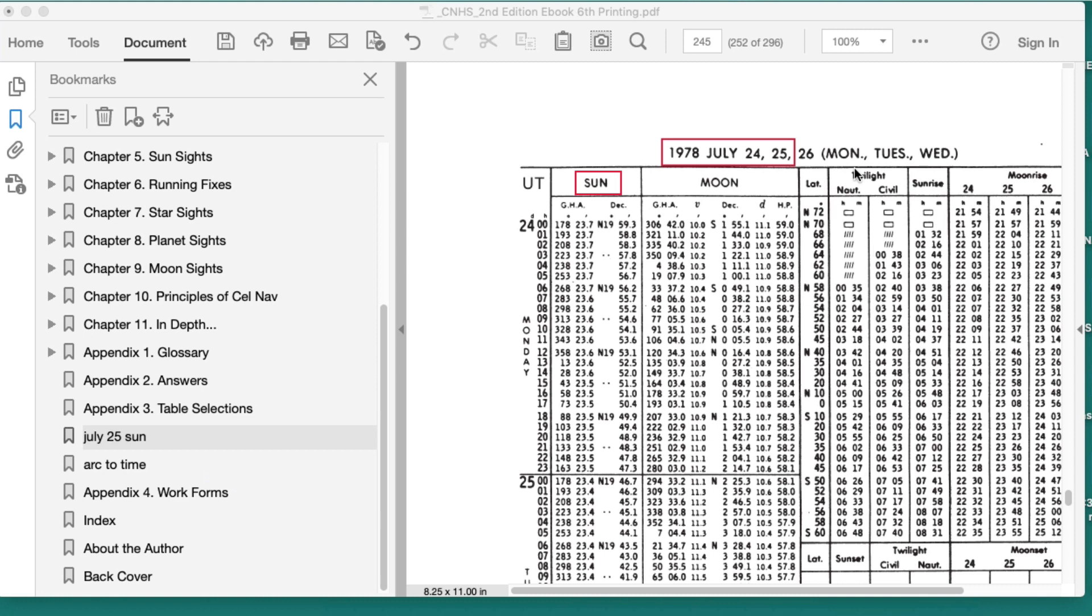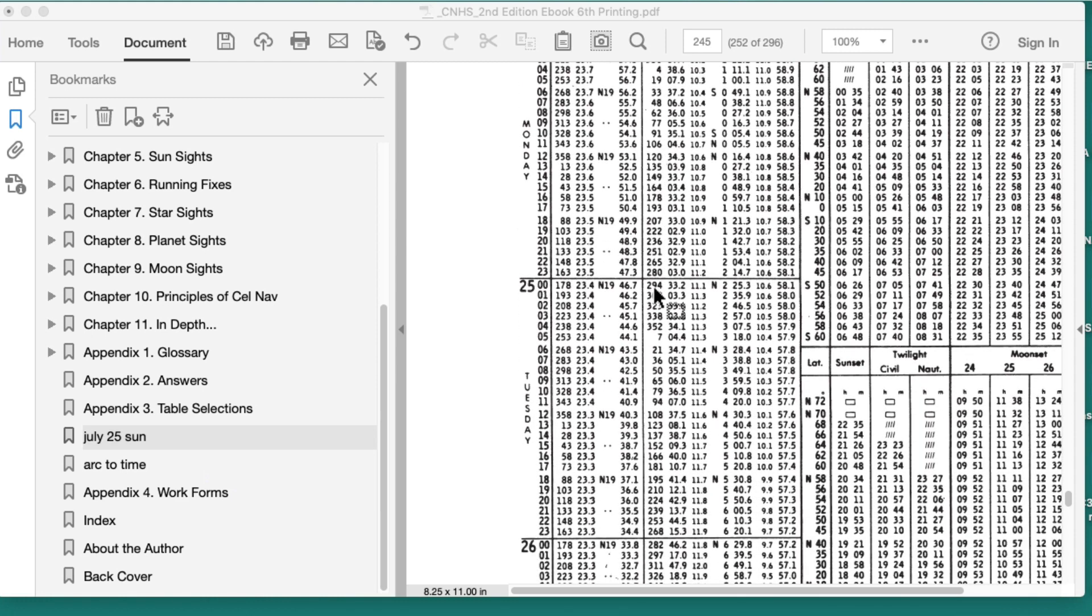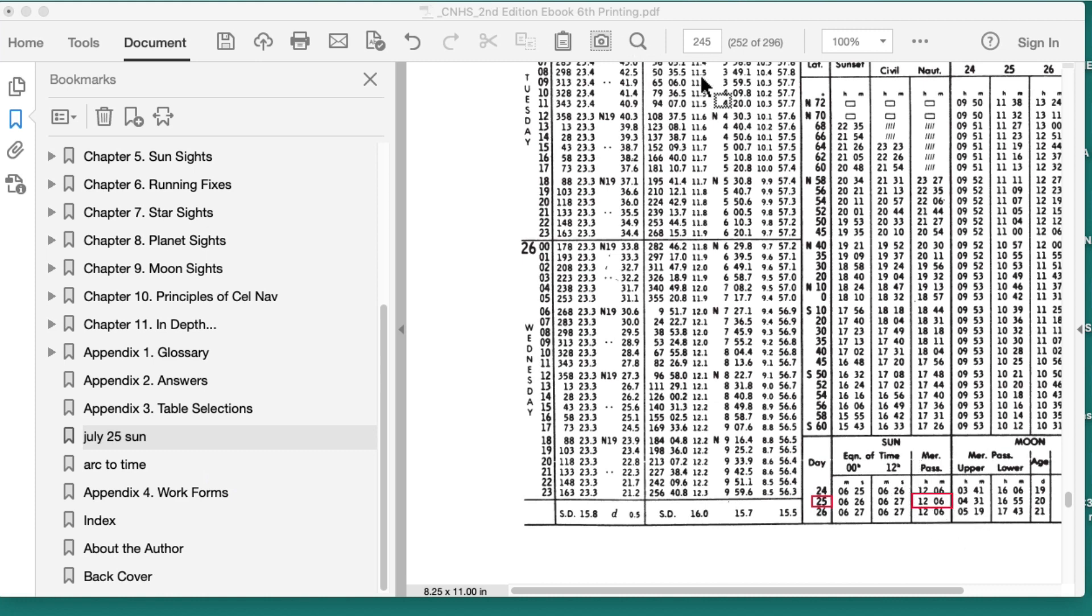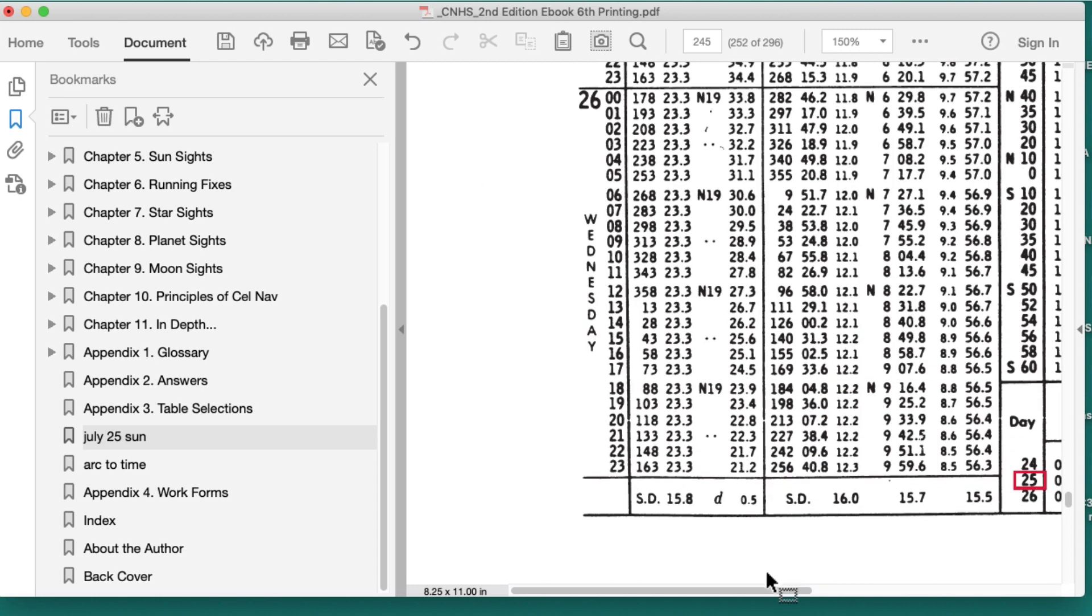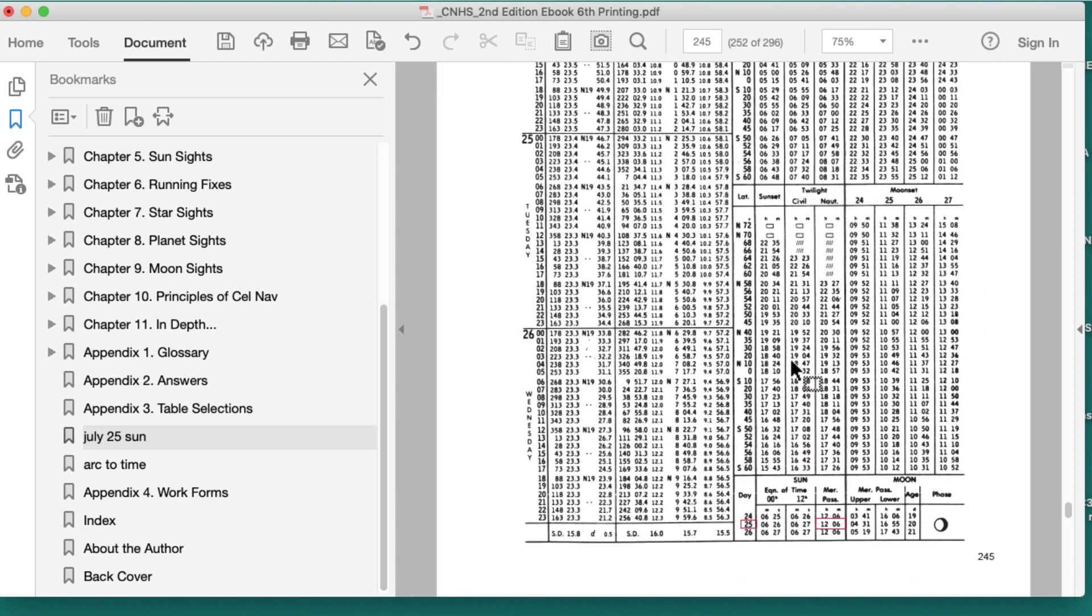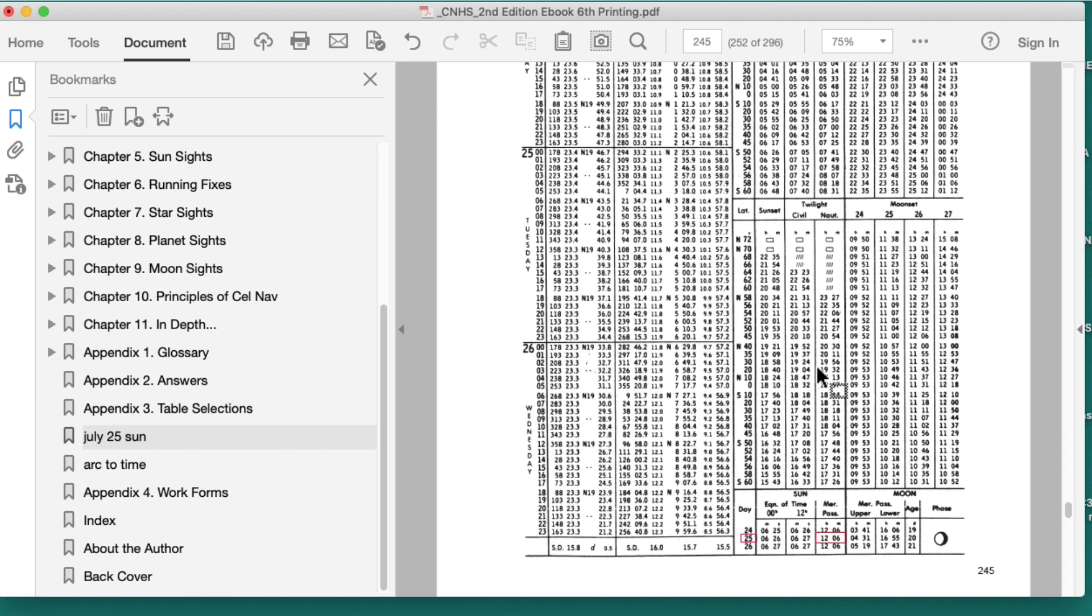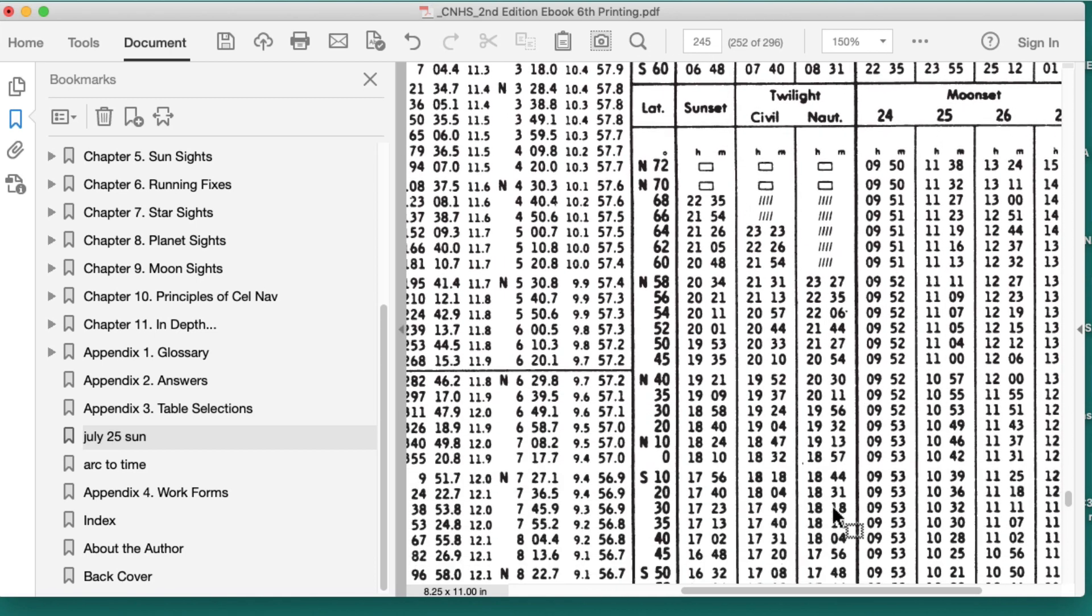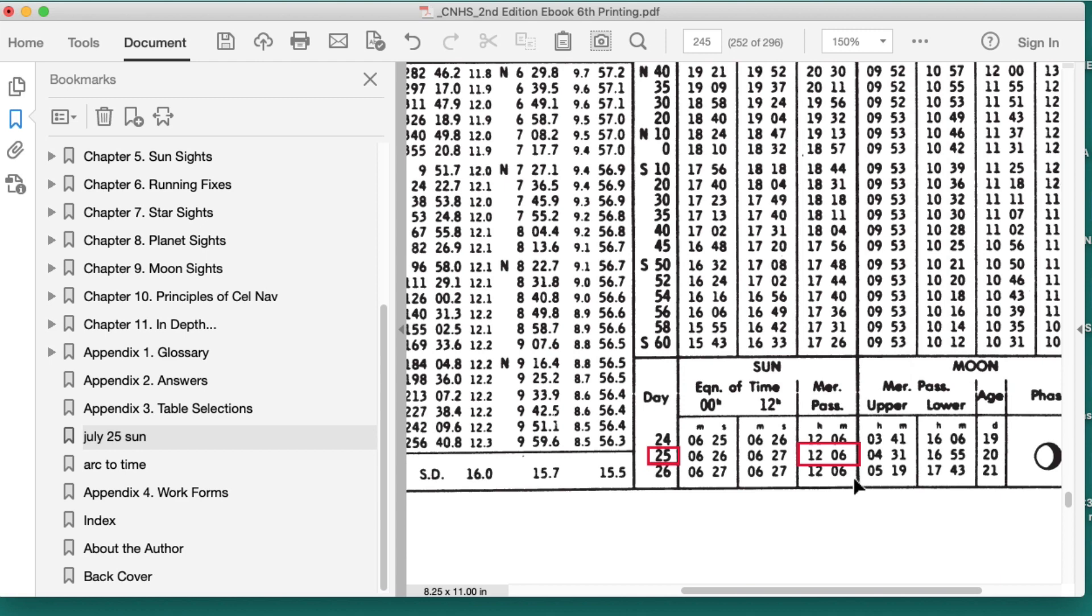July 24th, 25th. Here's the sun on the daily pages. You go down to the bottom, and then over here, there's a sample daily page of the nautical almanac. At the bottom of this page, you go down there and you see the number right here.